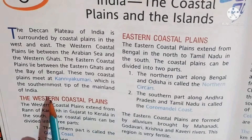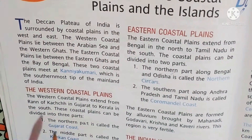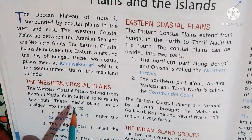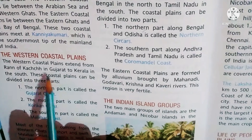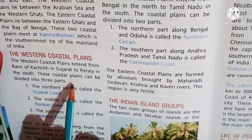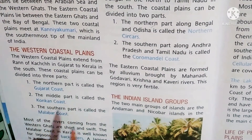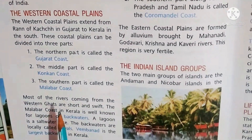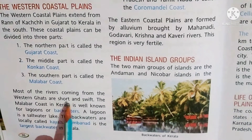The western coastal plains extend from the Rann of Kutch in Gujarat to Kerala in the south. These coastal plains can be divided into three parts: the northern part, the middle part, and the southern part. Most rivers coming from the Western Ghats are short and swift, and very steep.